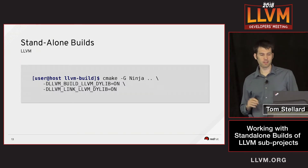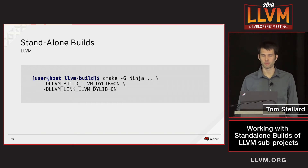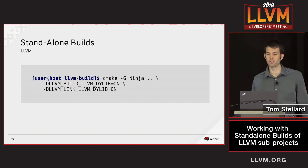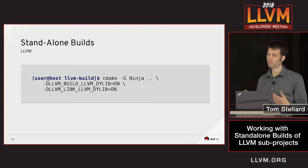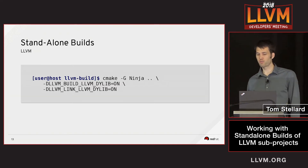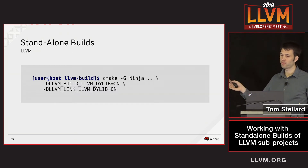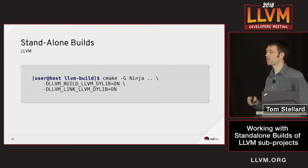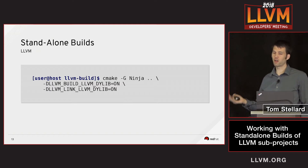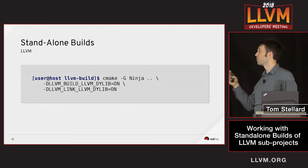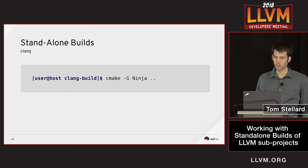Now let's look at exactly how to do standalone builds. I'll walk through an example building Clang and show some of the LLVM CMake features that make this work. The first step of doing a standalone build of any project is to build and install LLVM. For this example, we use a simple CMake invocation. The LLVM_BUILD_LLVM_DYLIB option tells CMake to build a single shared object called libLLVM.so, and LLVM_LINK_LLVM_DYLIB causes all the tools you build to link against that shared object instead of the static libraries.